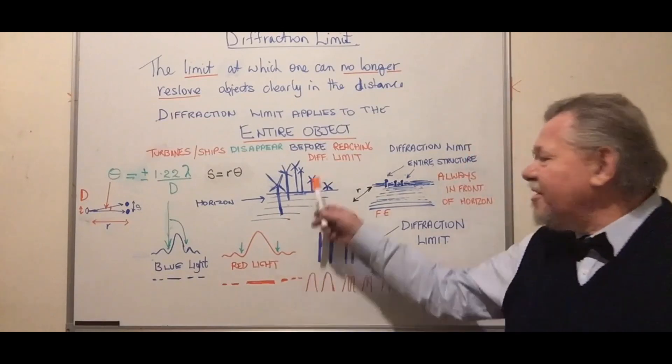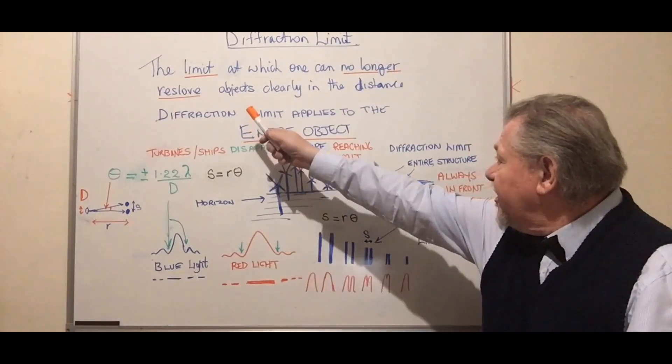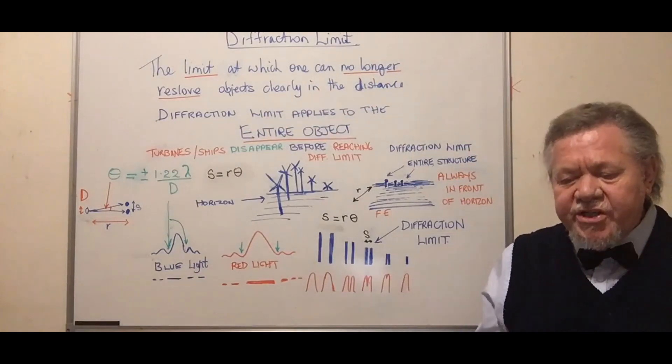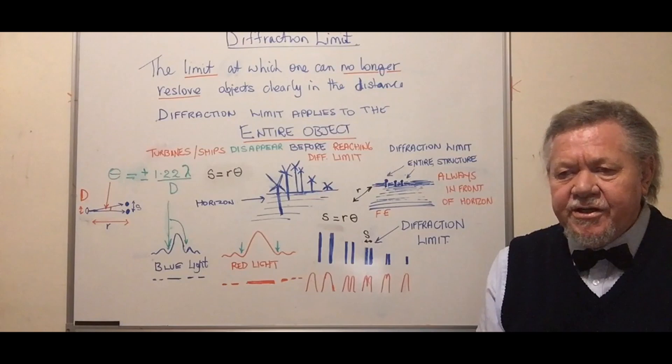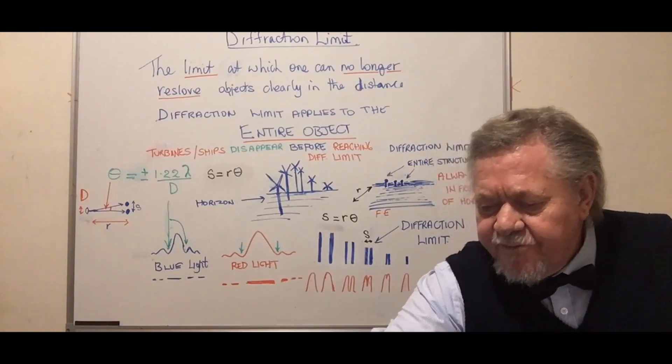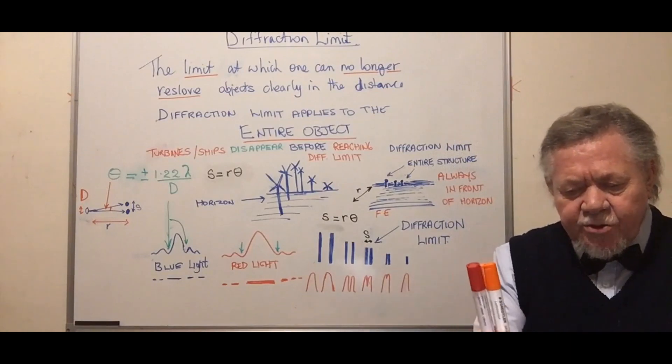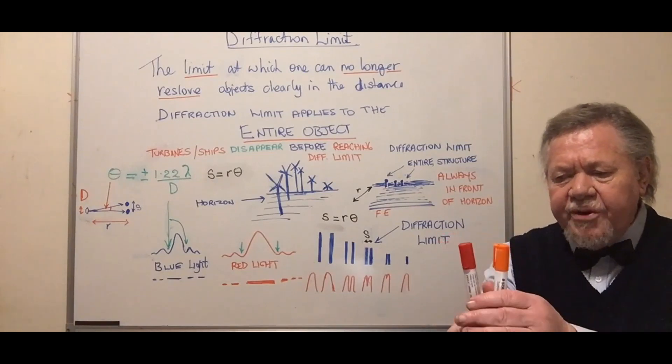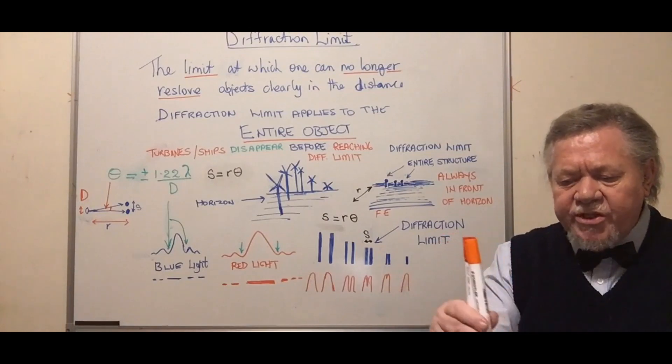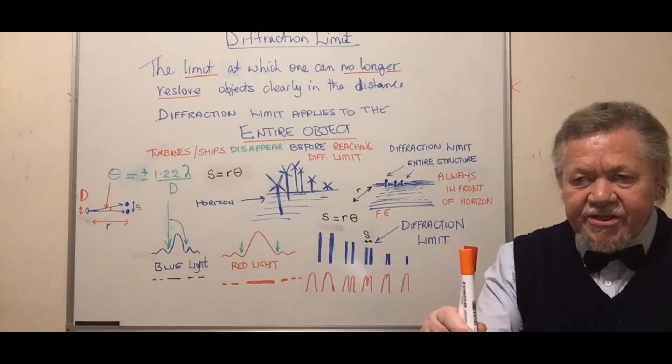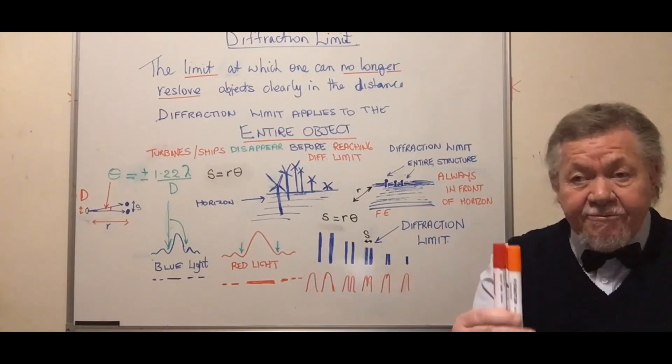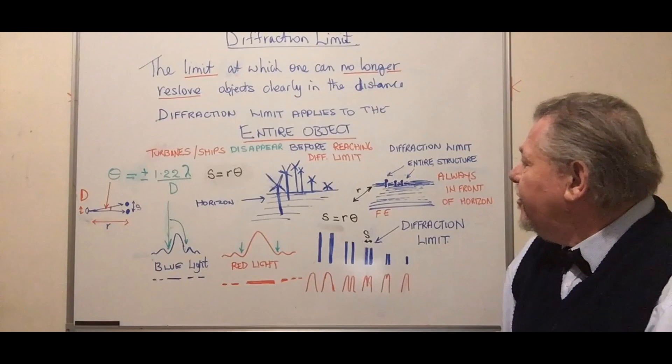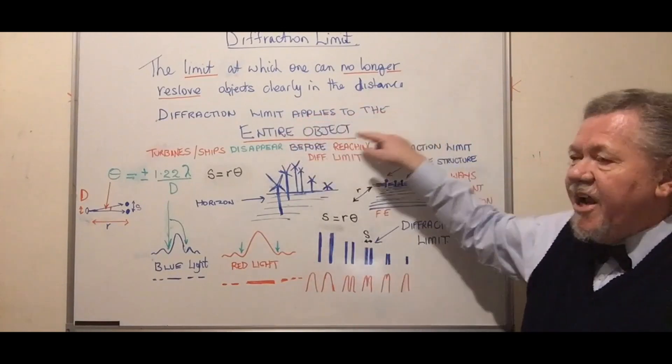Let's look at what diffraction limit is. It's the limit at which you can no longer resolve objects clearly in the distance. For instance, if two pens are together and you get further away, they'll appear to merge until you can't tell them apart. That's the diffraction limit: the point where you can no longer tell they are two separate objects. The diffraction limit applies to entire objects.